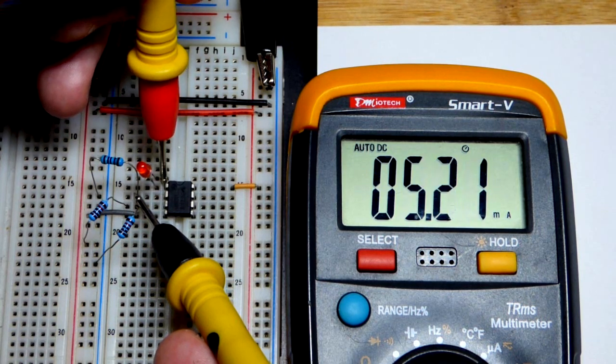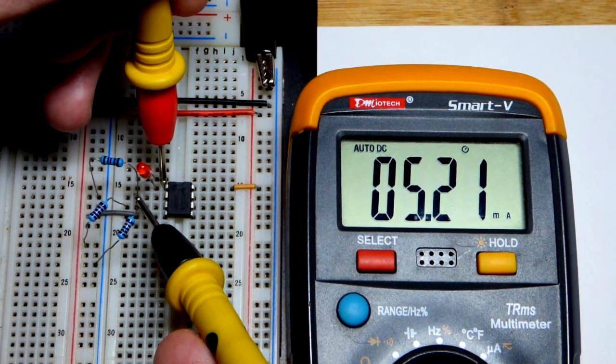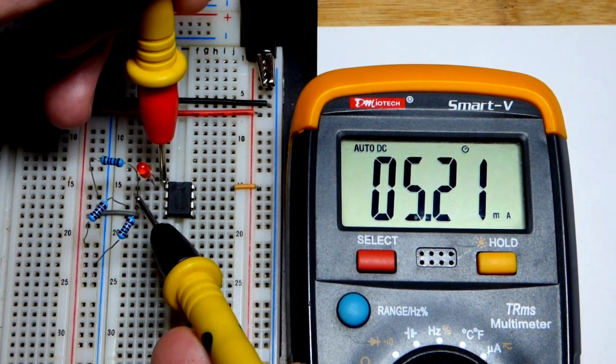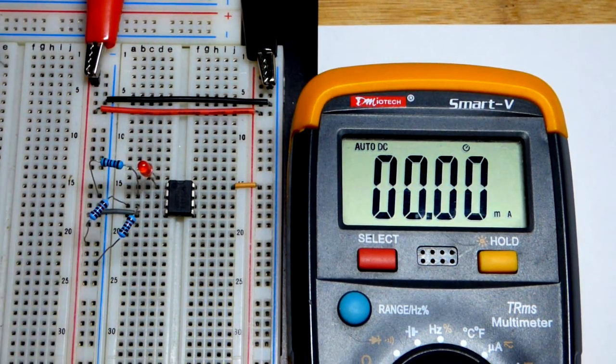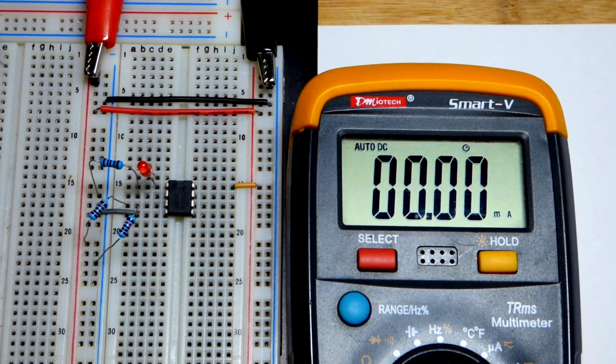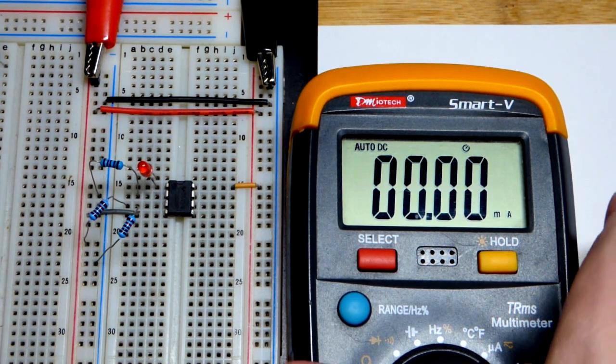So now we're going to bypass the LED. There's no current going through the LED. It's just coming right from the output. And it's still 5 milliamps. Even though the load changed significantly, it held the same amount of current. So that's really about it.